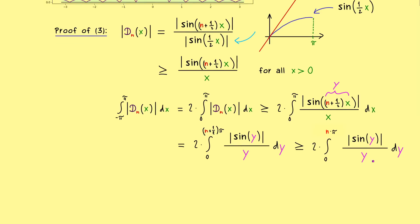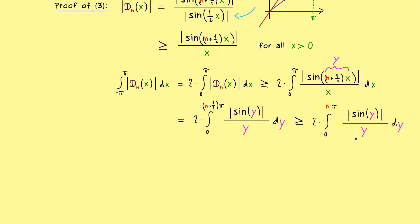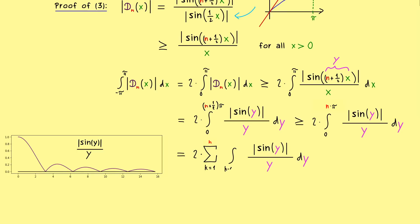This means the whole integral can be written as a sum of integrals. And there we can start at k equals 1 and go to n. And then the lower bound of the integral is (k - 1) times π, and the upper bound is k times π. So this is the whole thing, and now we can estimate the function inside the integral.